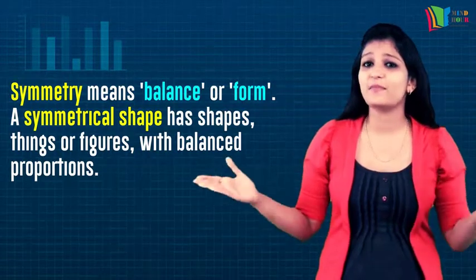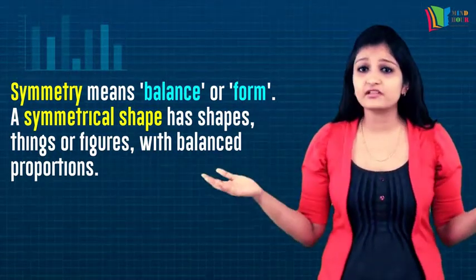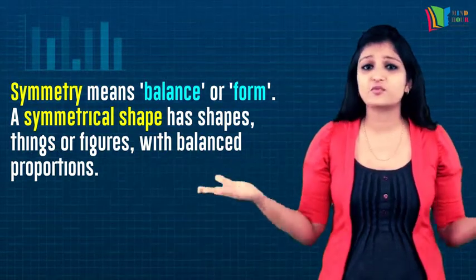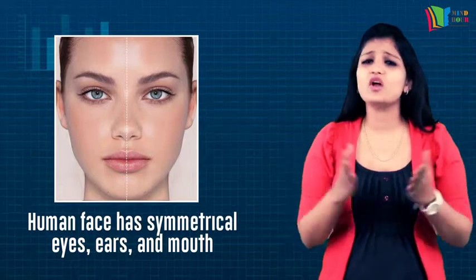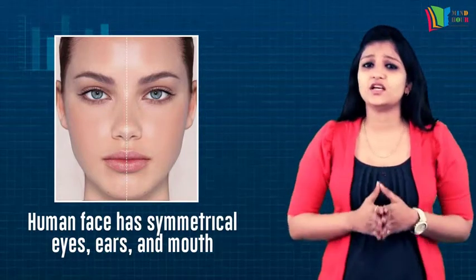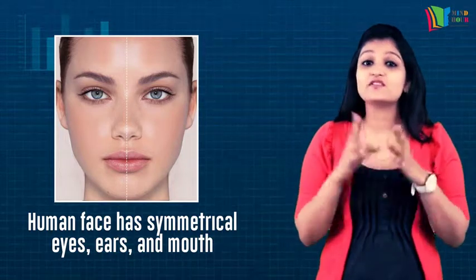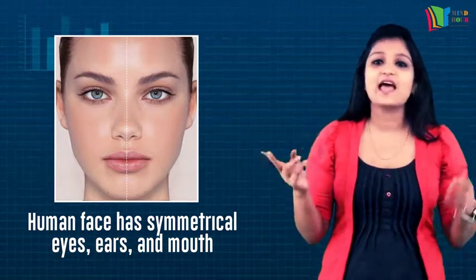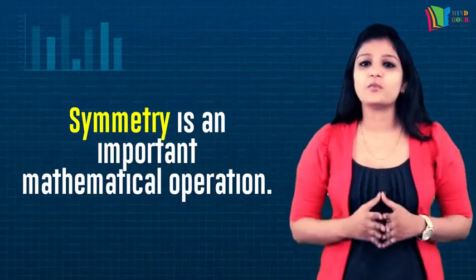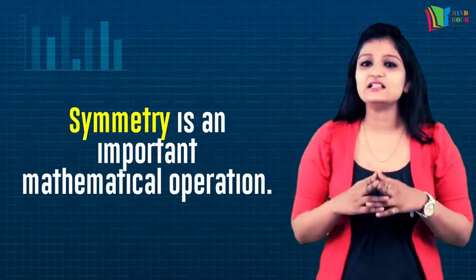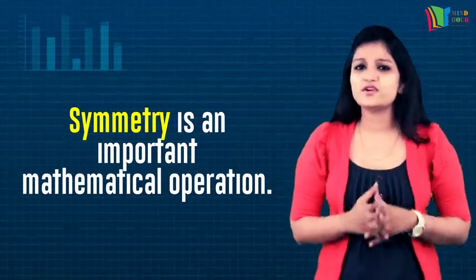Symmetry means balance or form — shapes, things, or figures which are in evenly balanced proportions are symmetrical in nature. Symmetry can be seen almost everywhere in daily life. The human face is a model of symmetry, complete with two eyes, two ears, and a symmetric mouth. Symmetry is a mathematical operation or transformation that results in the same figure as the original figure or its mirror image.